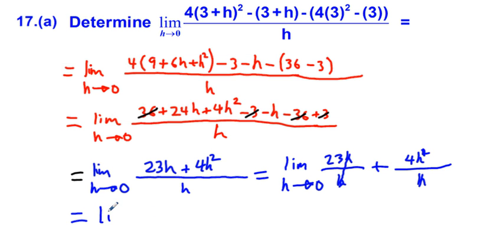We bring down what we have left: the limit as h approaches 0 of 23 plus 4h. Now we substitute in 0 for h. This expression equals 23 plus 4 times 0, which equals 23.